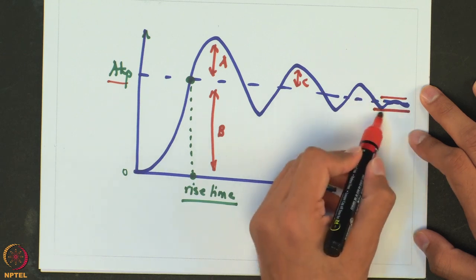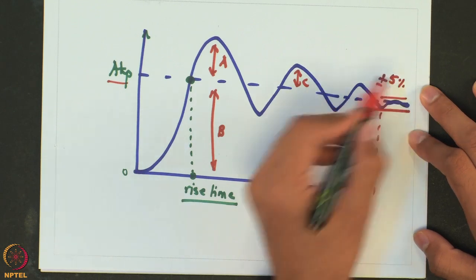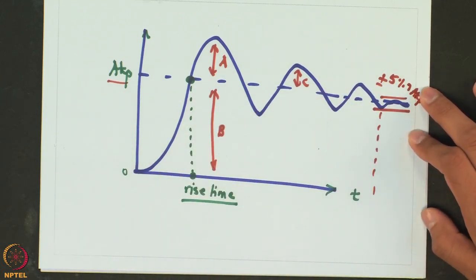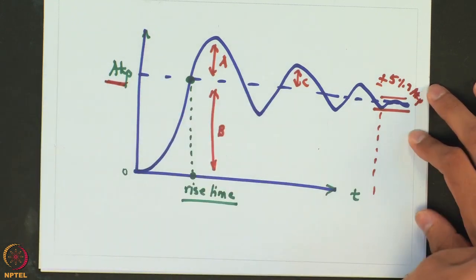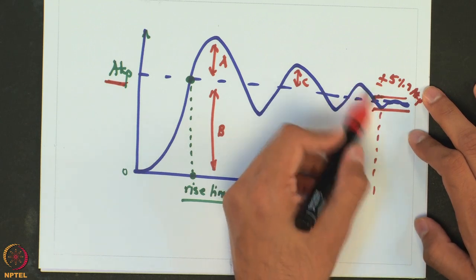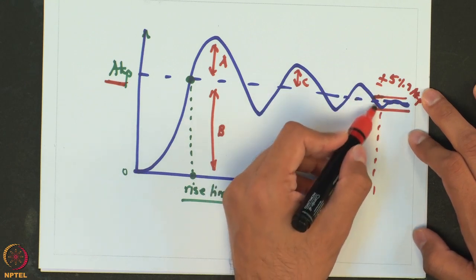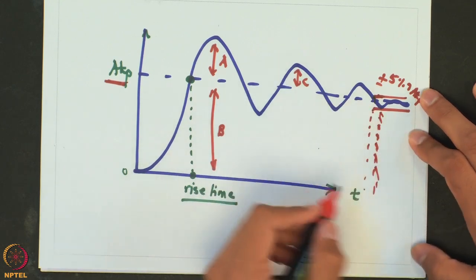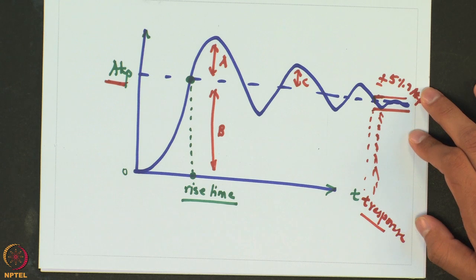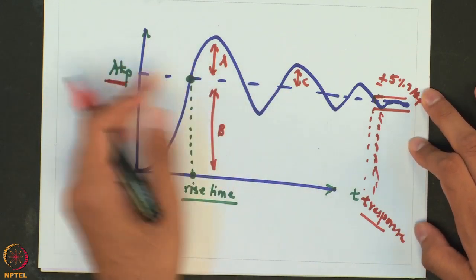The next term is response time, characterized as the time by which the response has reached within plus or minus 5 percent of the ultimate value. Since the oscillating response technically takes infinite time to reach exactly AKP, for all practical purposes we say the response time is when the sinusoid first enters the 95 to 105 percent band around AKP. From a controller perspective, we want this response time to be as low as possible for faster stabilization.